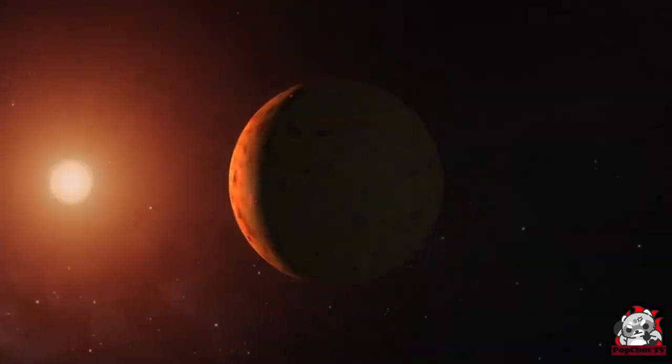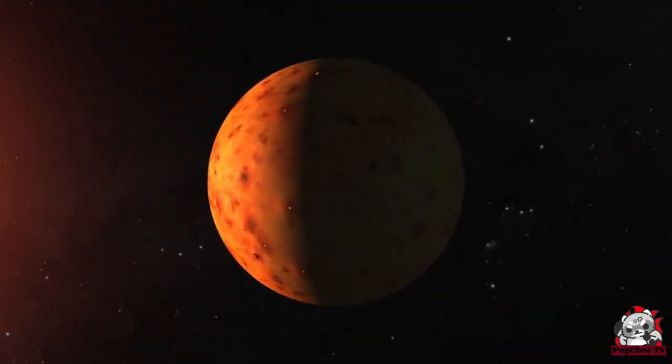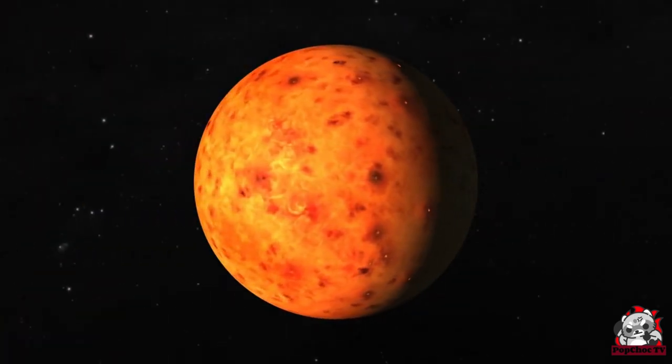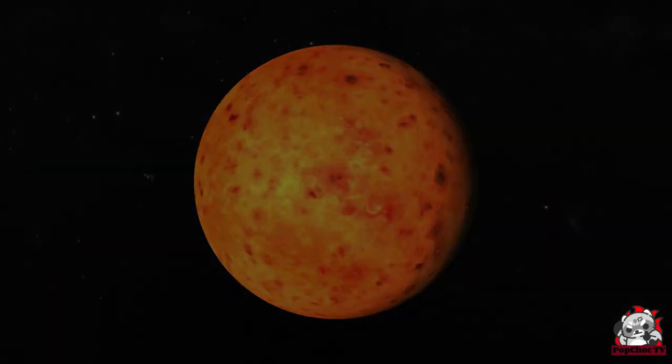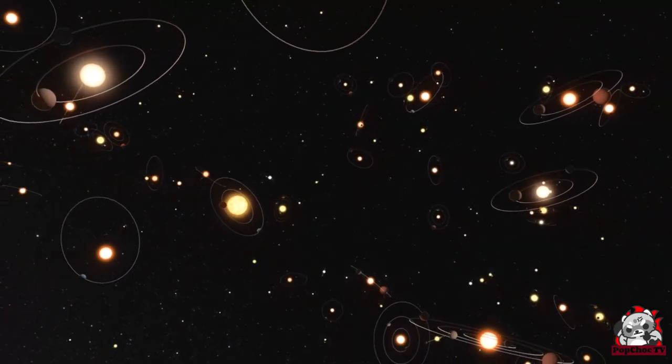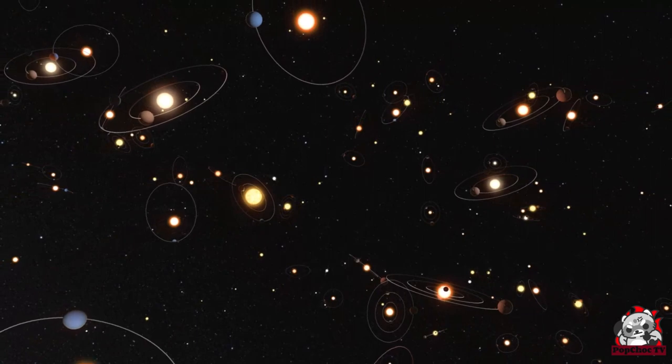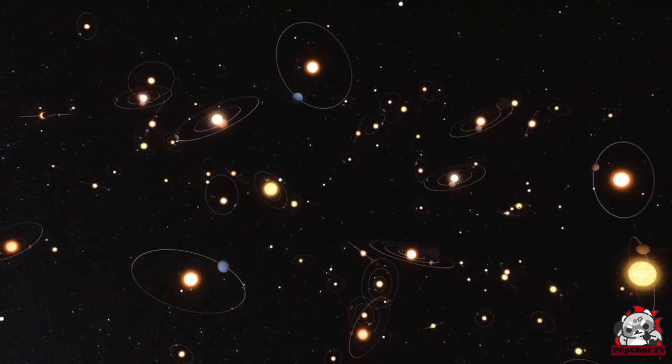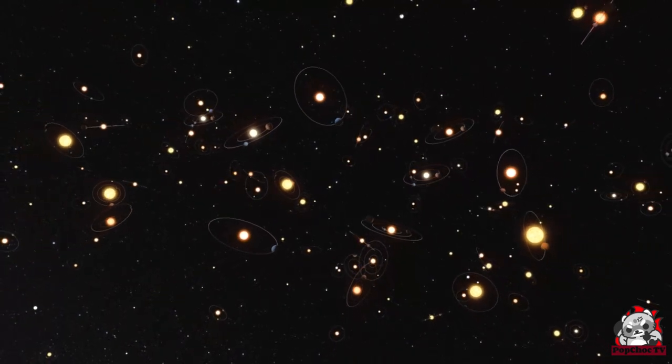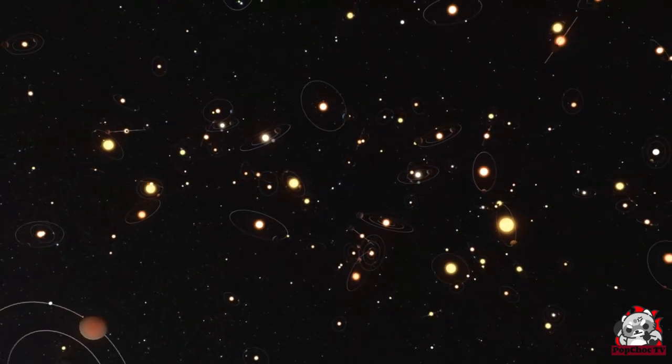Coming in at number 8, we have the perplexing Fermi paradox. The Fermi paradox refers to the apparent contradiction between the high probability of extraterrestrial life in the universe and the lack of evidence or contact with such civilizations. Given the vast number of stars and potentially habitable planets, one might expect our galaxy to be teeming with intelligent life.